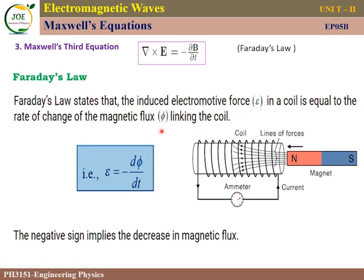The induced electromotive force in the coil is equal to the rate of change of magnetic flux. If the magnetic flux does not vary with respect to time — that is, dΦ/dt equals zero — there is no induced EMF. The negative sign in the equation implies a decrease in magnetic flux, consistent with Lenz's law.